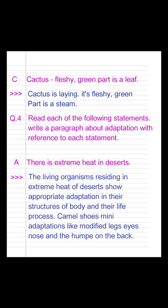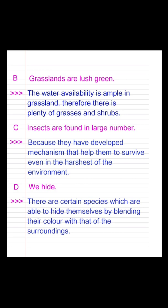Question B: Grasslands are lush green. Answer: The water availability is ample in grasslands; therefore there is plenty of grasses and shrubs. Question C: Insects are found in large numbers. Answer: Because they have a highly developed mechanism that helps them to survive even in the harshest environments. Question D: We hide. Answer: There are certain species which are able to hide themselves by blending their color with that of the surroundings.